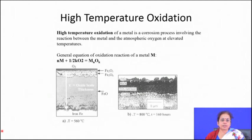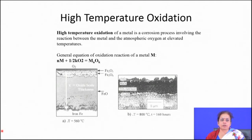As soon as oxidation initiates, the process is very fast initially. But as soon as the oxide layer forms, subsequent oxidation kinetics will depend on the nature of the oxide film forming on the surface. If the oxide film is highly protective, the kinetics of oxidation will be slower; but if it is not protective and contains lots of defects, the rate of oxidation will be higher with time.